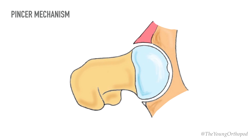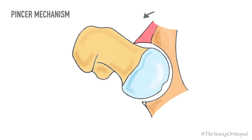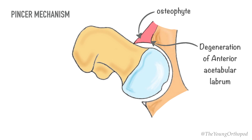As a consequence, during joint motion a bony ridge or osteophytes abuts against the front of the femoral neck. This results in fatiguing and degeneration of the anterior part of the acetabular labrum, along with a small zone of adjacent articular cartilage. There may also be an increased shearing force, mostly in the posterior part of the joint during medial rotation of the hip.